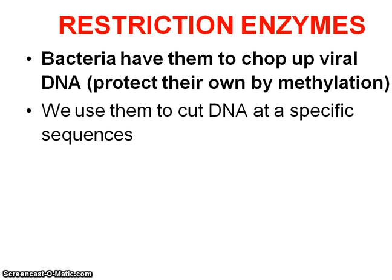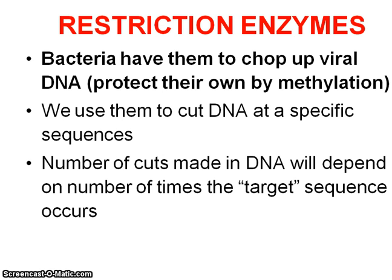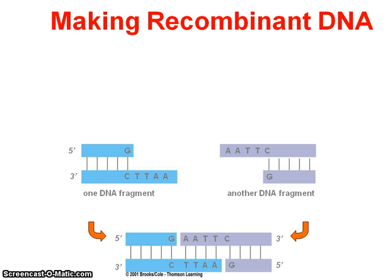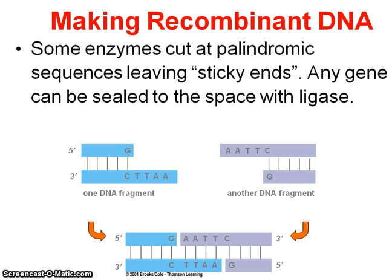They protect their own DNA by putting little methyl groups on their DNA. We've taken these enzymes and we use them so that we can either cut DNA to do a DNA fingerprint, because everybody's DNA is going to be cut a little differently depending on how many recognition sites and where the recognition sites are for that enzyme. We can also use it to splice together DNA, like in this picture.